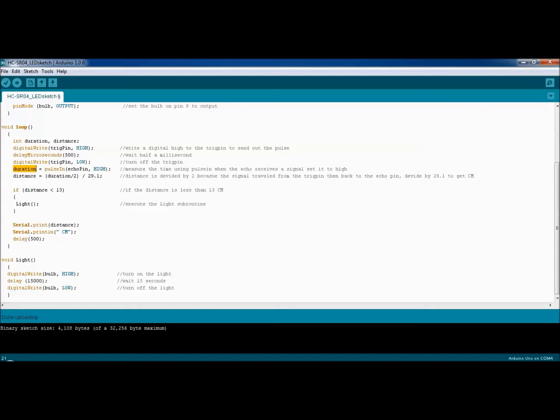That duration by itself does not give me centimeters. We transform it into distance using this formula: the distance is equal to the duration divided by 2, because the trigger pin sends out the pulses and the echo pin waits until it comes back. We divide by 2 and then divide it by 29.1 to change it into centimeters.